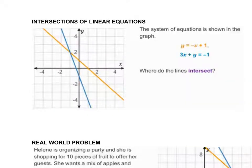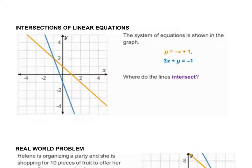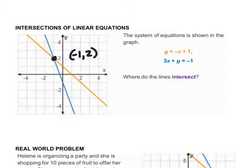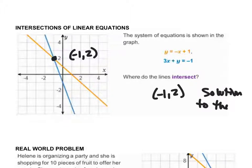We can also look at this graphically. Sometimes you're given the system and the graph of that system, and we're looking for where the lines intersect — that is the happy place. In this case the point of intersection is negative one comma two, which is the solution to the system.